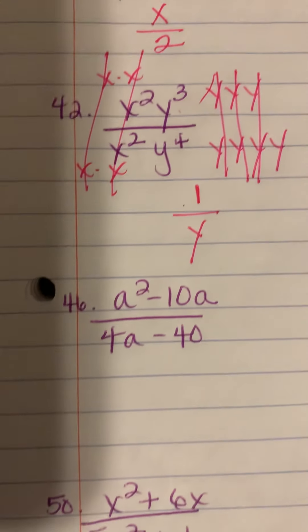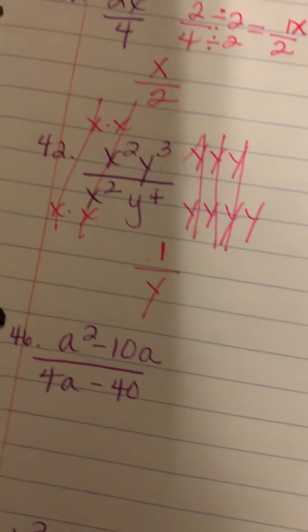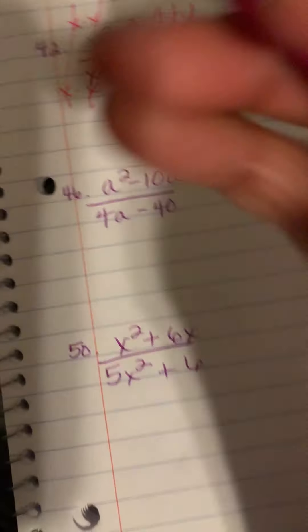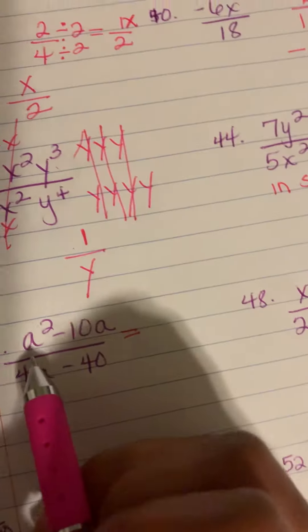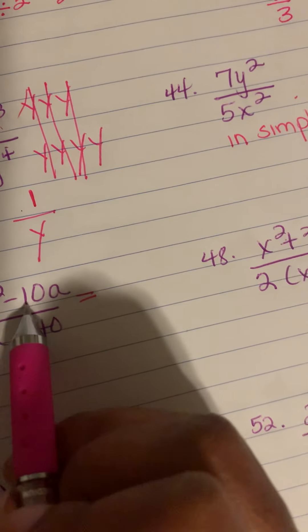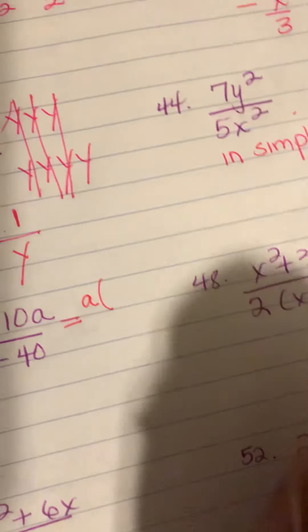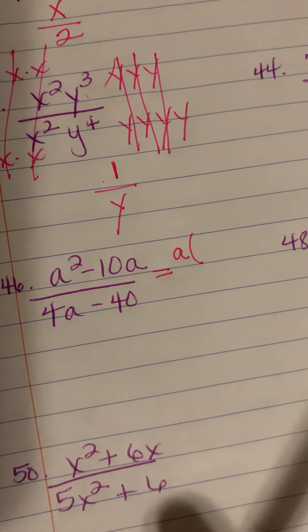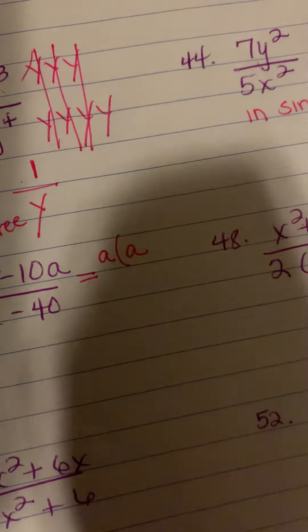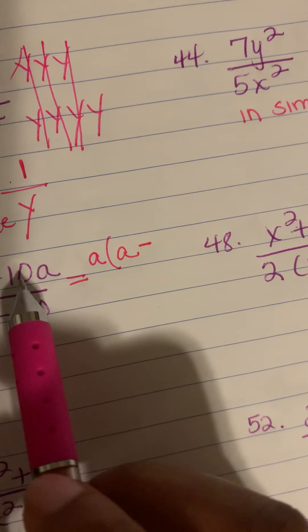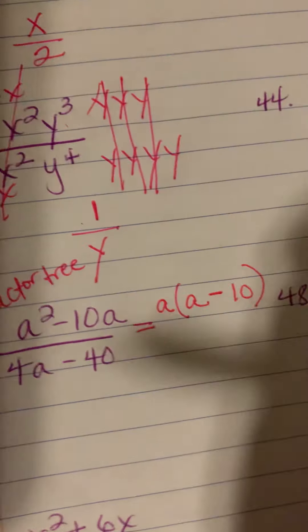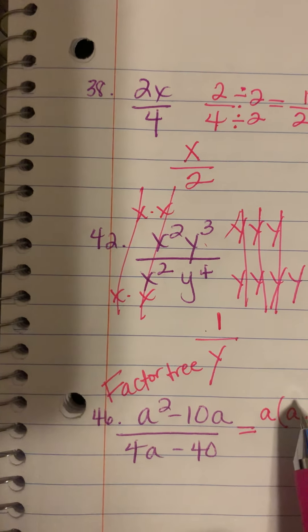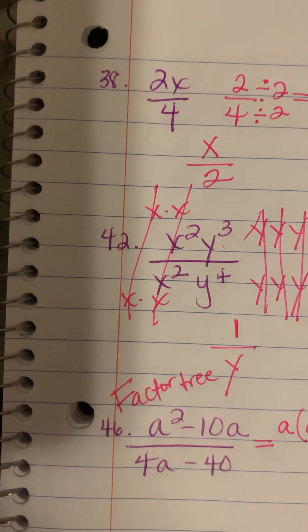Now help me factor this one out — the directions say write each expression in simplest form. Go back and look at section 5.3. I'll factor out an a — think about the factor tree to find what they have in common. Factoring out a gives a squared, and a times 10 gives negative 10a using the distributive property like the rainbow method.